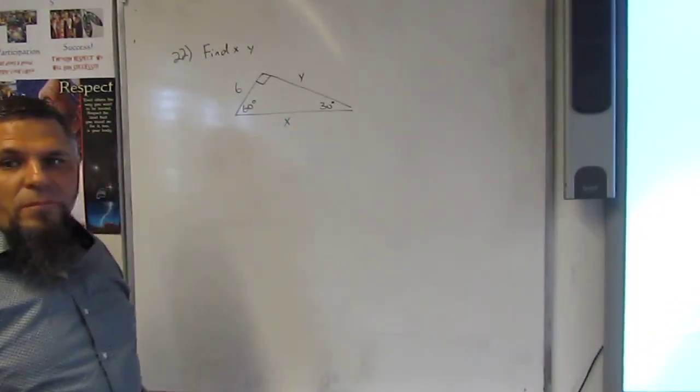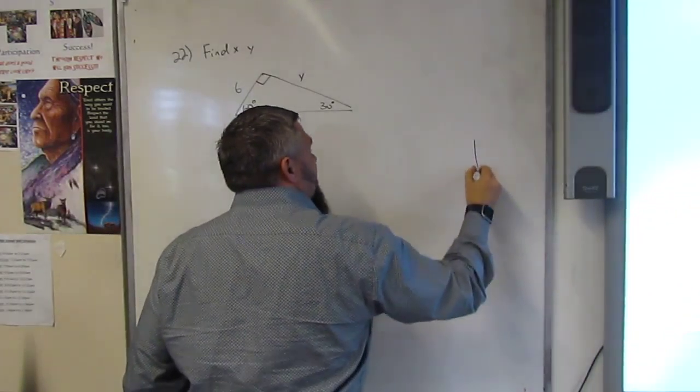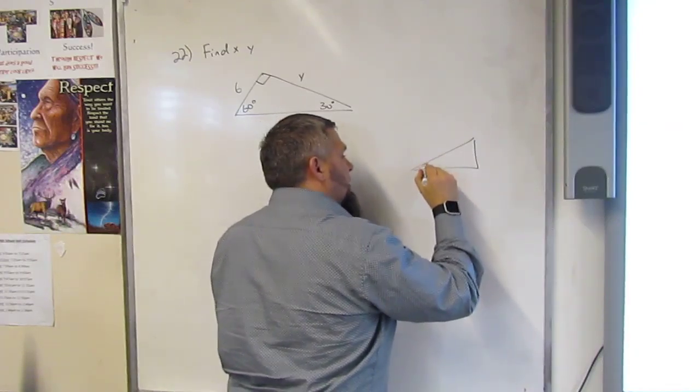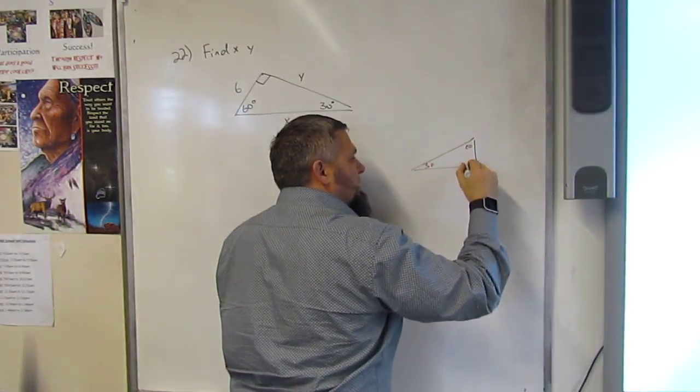So what are we going to use? 30, 60, 90. Very good. So our 30, 60, 90 triangle usually looks like this, right? 30, 60, and 90.